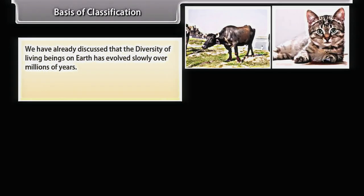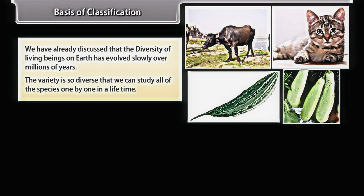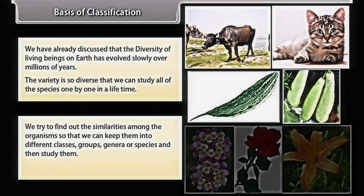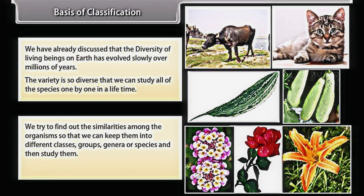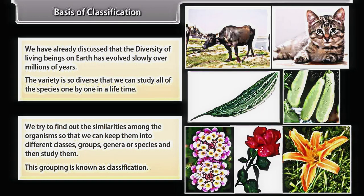We have already discussed that the diversity of living beings on earth has evolved slowly over millions of years. The variety is so diverse that we cannot study all of the species one by one in a lifetime. So we try to find out the similarities among organisms so that we can keep them into different classes, groups, genera, or species and then study them. This grouping is known as classification.